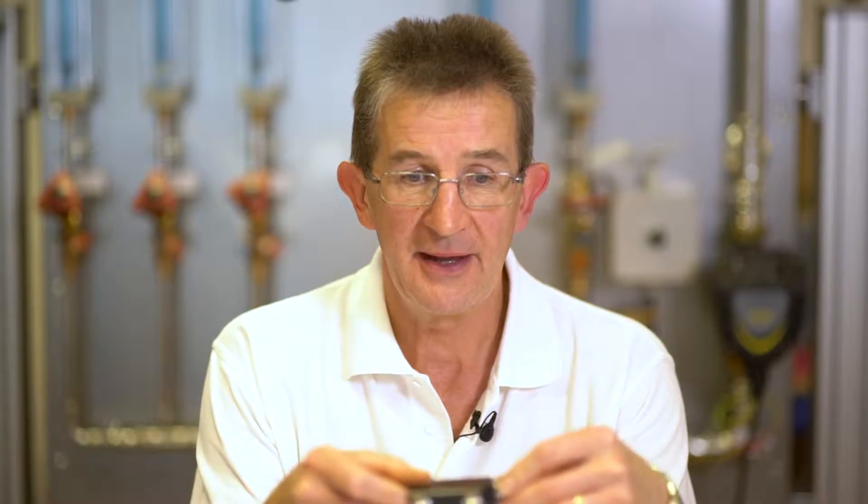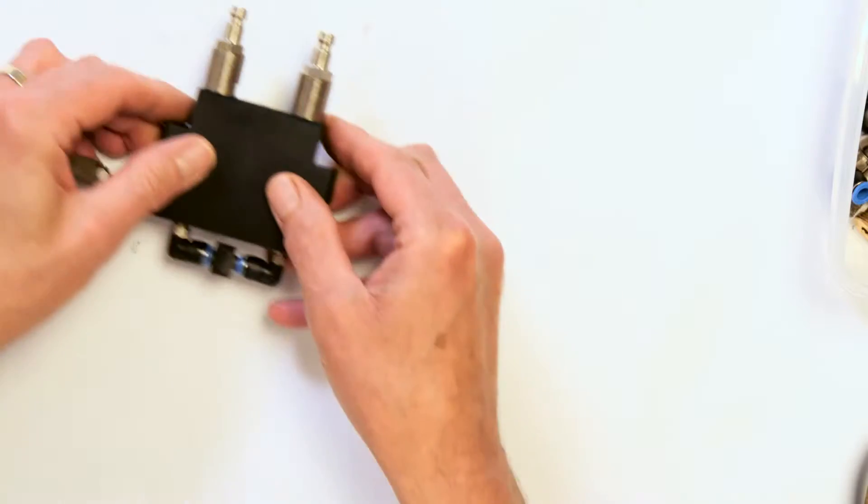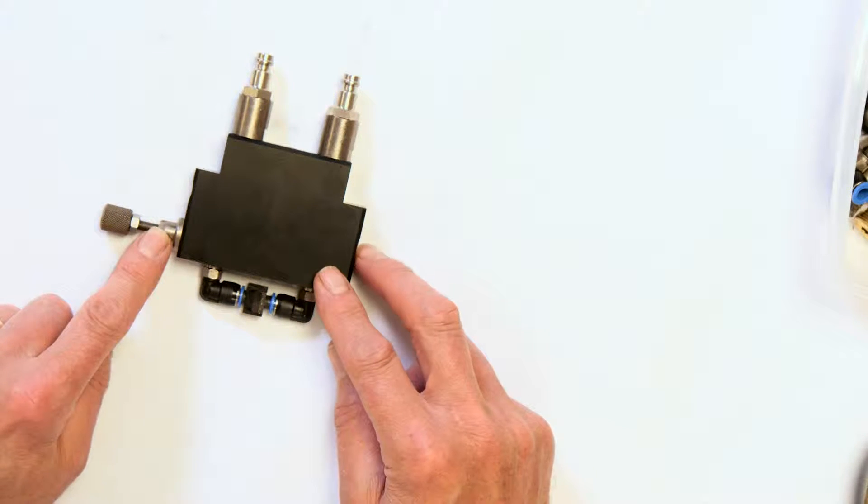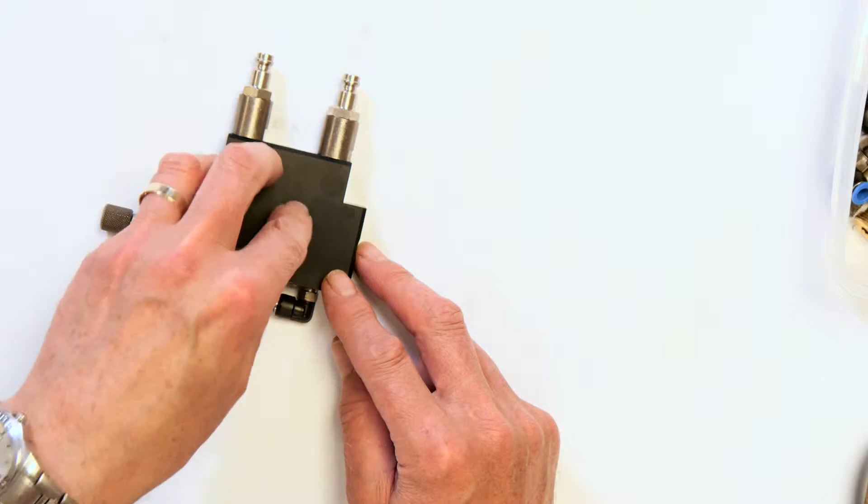And we now take the reassembled component here. We take the strainer housings off. We take the equalizing valve off and we reassemble the unit again into its rear enclosure.